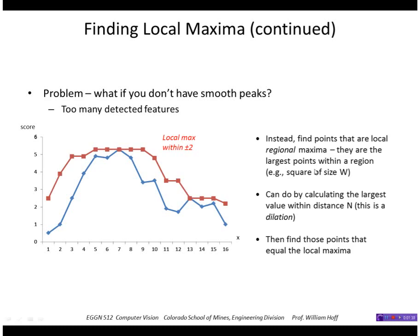So we can do that by computing the local maxima of these scores within a certain region, let's say a square of size W by W. So here in one dimension, I've computed the local maximum within a distance plus or minus two of every point.